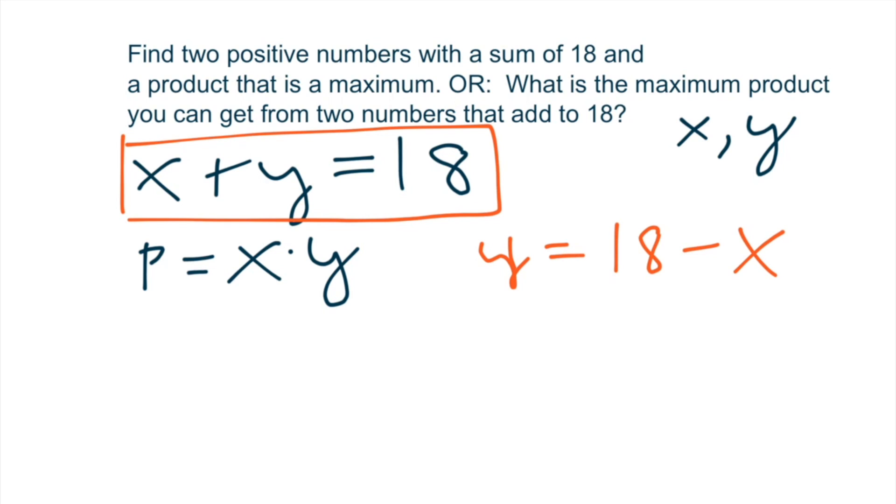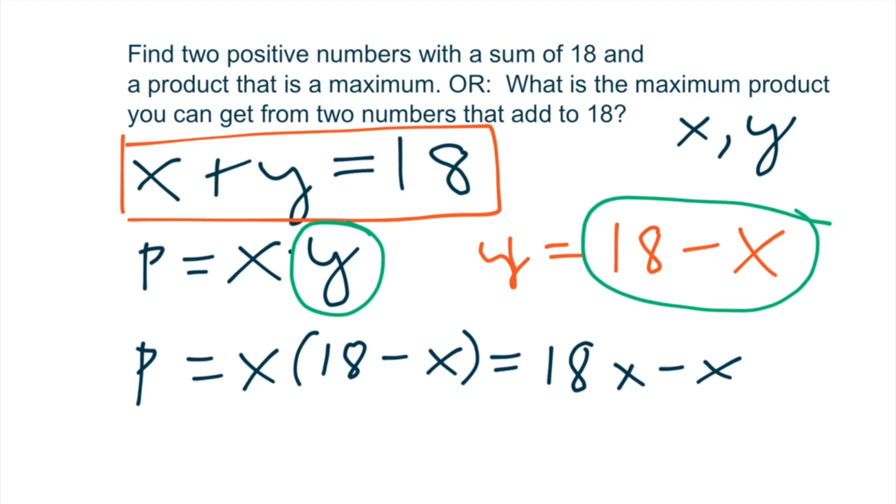And now I'm just going to swap, because this is equal to y, right? So I swap it in here, or substitute it in. And then you would get that the product will equal x times 18 minus x. And it's nice to distribute this x. So I get 18x minus x squared. This will just make taking the derivative a little bit easier.